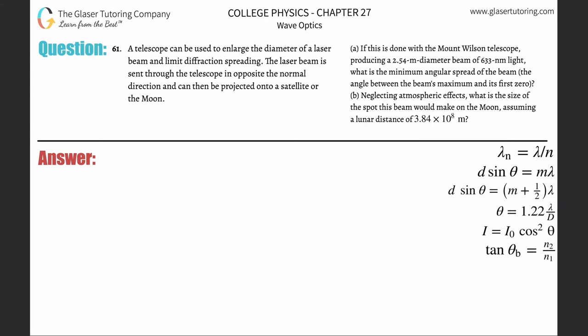Number 61, a telescope can be used to enlarge the diameter of a laser beam and limit diffraction spreading. The laser beam is sent through letter A, this is done on the Mount Wilson telescope producing a 2.54 meter diameter beam of 633 nanometer light. What is the minimum angular spread of the beam?